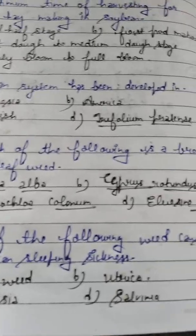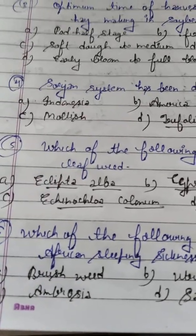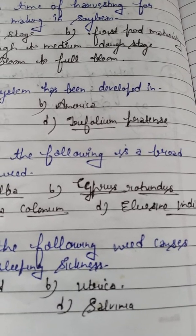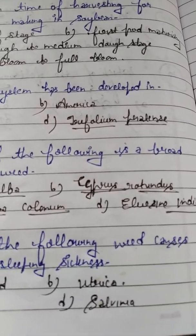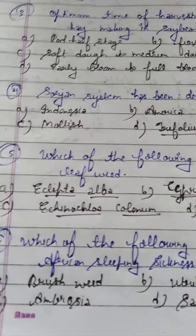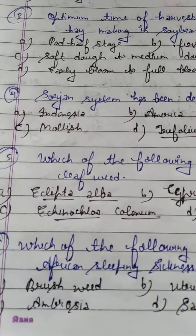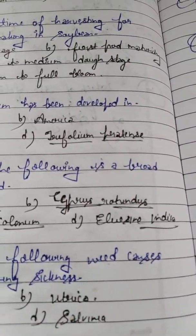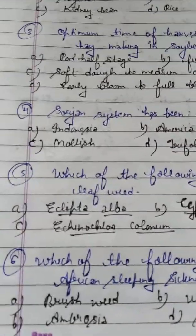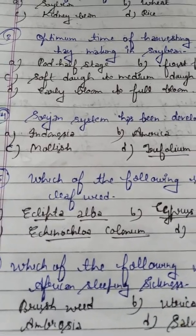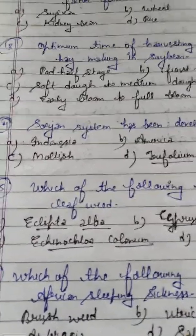Cyperus rotundus is a very common weed — it is a narrow leaf weed, commonly called 'Motha.' Echinochloa colonum, if you have planted rice, you could have seen it — it is called 'Jangli dhan.' Eleusine indica is also a narrow leaf weed. Eclipta alba is a broad leaf weed, also called Bhrangraj. Please remember it.